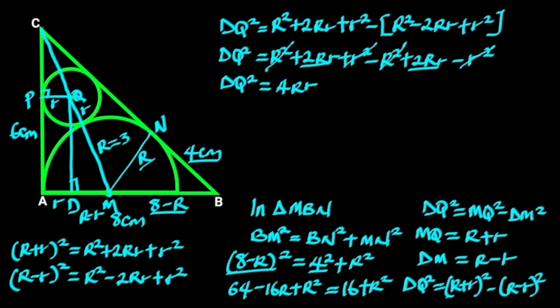Next we take the square root of both sides. Doing so gives us DQ equals the square root of 4Rr, which equals 2√(Rr).